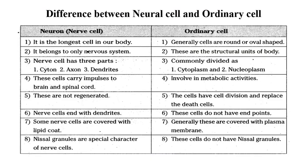Before starting the anatomy of the nervous system, there is a slight difference between the neural cell and the ordinary normal body cell. The nerve cell is the longest cell in our body, as seen in the diagram, while the ordinary cell is round and oval in shape. The nervous cell only belongs to the nervous system, while the ordinary cell belongs to the structural part of the body.